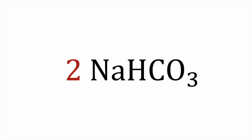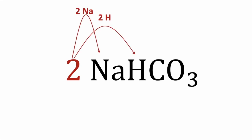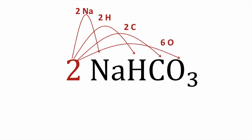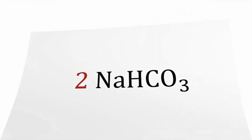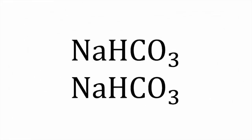For example, let's say we have two molecules of sodium bicarbonate. There are several ways you could do this. If you're good at the distributive property in math, you could distribute the two over the molecular formula. Or you could write the molecule twice — the number of times the coefficient specifies — and count the atoms.